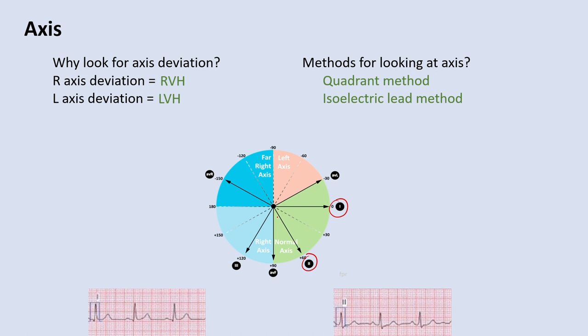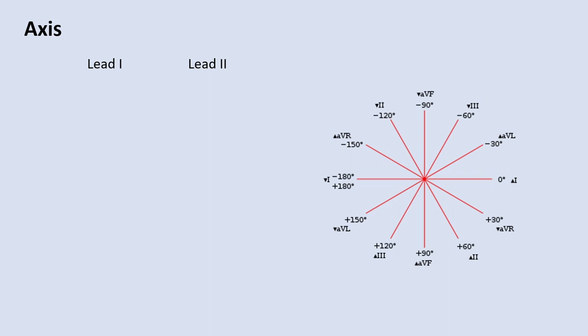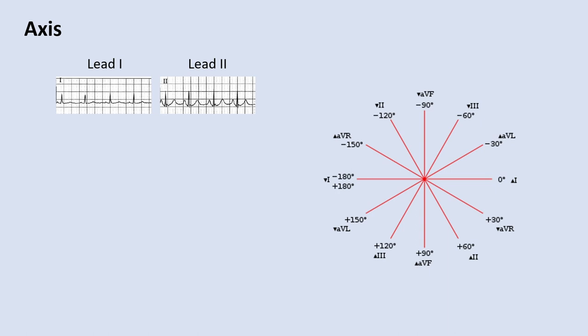This is why I use lead 1 and lead 2 rather than lead 1 and AVF. Using AVF only calculates part of the axis range, and you'd be missing a portion of the normal orientation that you might see in a normal heart. Now that we've talked about the mechanics, let's go through the practical way of using the quadrant method to calculate the axis.